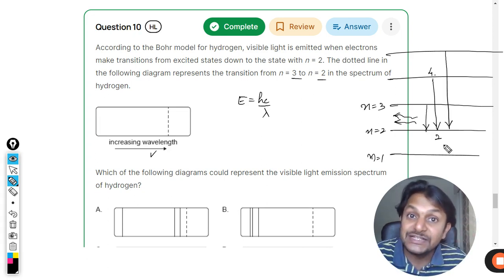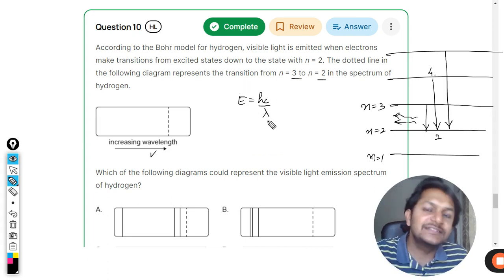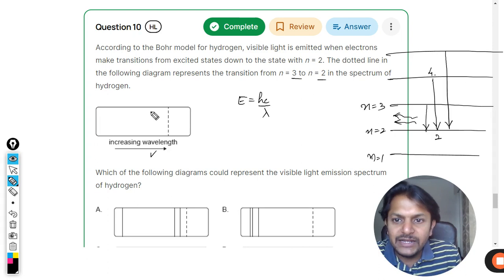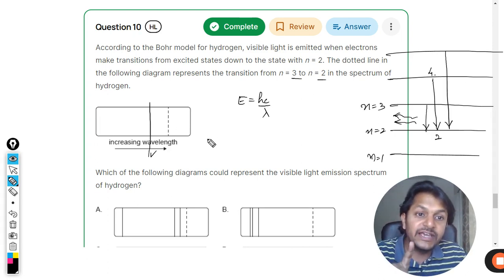The photon produced from n equals four to n equals two is bigger in size and has more energy. More energy means lesser wavelength, so the wavelength will be shorter, going towards the left, not towards the right.